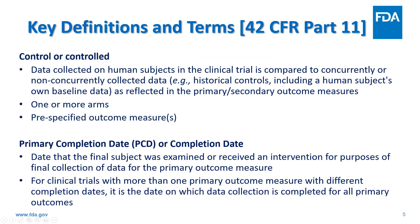Additional definitions include control or controlled, which means a clinical study that includes a comparison group. The comparison group receives a placebo or another treatment or no treatment at all. Primary or secondary outcome data is collected concurrently or non-concurrently and then compared. The controlled clinical trial can have one or more arms and there are pre-specified outcome measures. For single-arm studies to be controlled, the data can be obtained, for example, from historical controls or a subject's own baseline data.